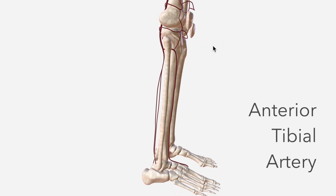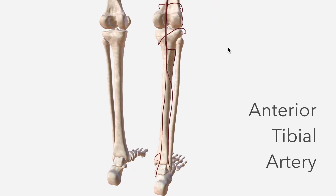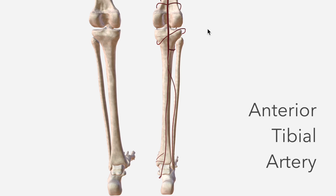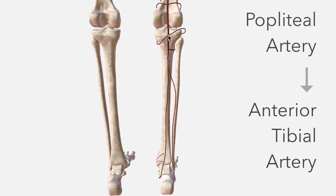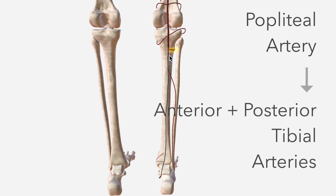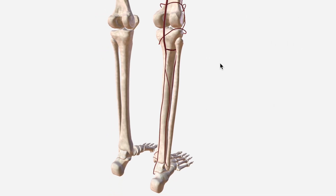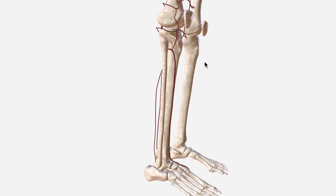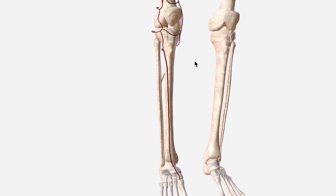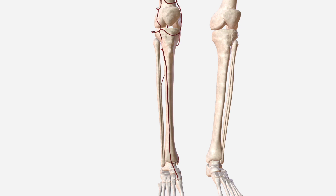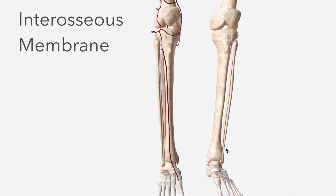The anterior tibial artery is one of the two continuations of the popliteal artery, which bifurcates into anterior and posterior tibial arteries. The anterior tibial immediately passes anteriorly between the tibia and the fibula, through a small opening at the superior border of the interosseous membrane, which is this big sheet of connective tissue.